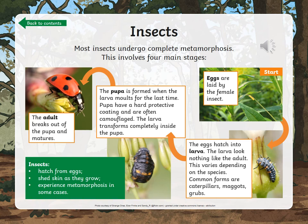Like with a frog, most insects undergo complete metamorphosis. This involves four stages. Eggs are laid by the female insect and then those eggs hatch into larvae — for example, a caterpillar or a maggot is an example of larvae. The pupa is formed when the larva molts for the last time. They have a hard protective coating and they're often camouflaged. And then finally, the adult breaks out of the pupa and matures.